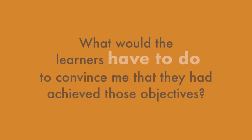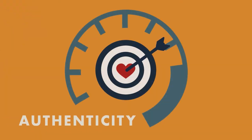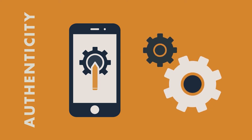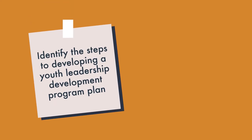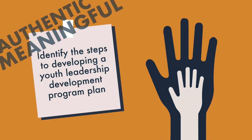Begin by asking yourself: what would the learners have to do to convince me that they had achieved those objectives? The process of working out the answer clarifies the real meaning of the learning objectives as you create the assessments. The more honest your objectives are, the more authentic your assessments can be — meaning the projects you ask them to engage in actually look like the work of the discipline outside the classroom. For example, you can have learners create an actual youth development program that they could implement in their lives outside the class. That's an authentic and meaningful assessment.